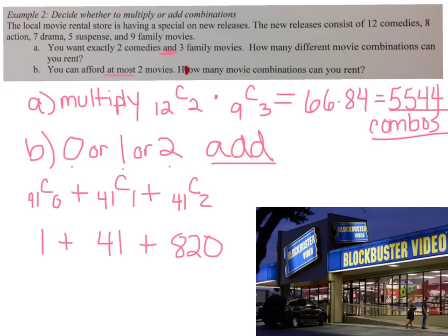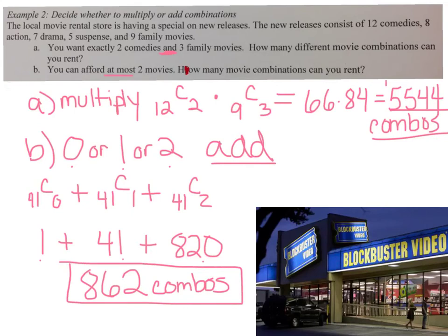When you add 1 plus 41 plus 820, because that's none or 1 or 2, we have 862 different combinations of 0, 1, or 2 movies. So when you have OR, you add. And when you have AND, you multiply. Make sure you know that.